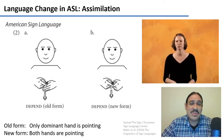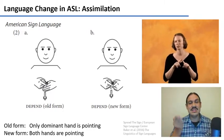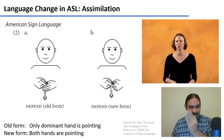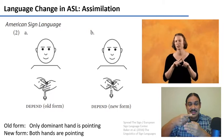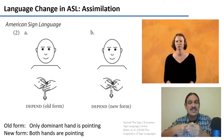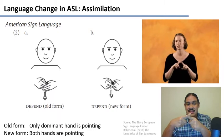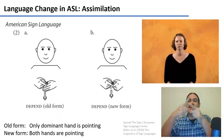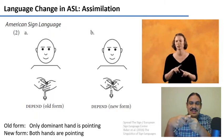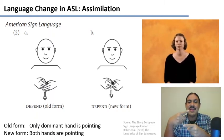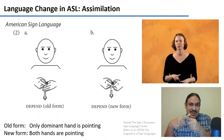What kinds of changes do signs go through? Pretty much the same as spoken languages. For example, we have phonetic assimilation. The ASL sign for 'depend' in its old form has one hand with fingers extended — the non-dominant hand — and then the dominant hand with one finger extended, the index finger, with a hooking motion. Over time, the sign evolved so that both hands now have a pointed gesture. The non-dominant hand assimilated to the shape of the dominant hand, so now we have a single uniform form. This is a case of assimilation.